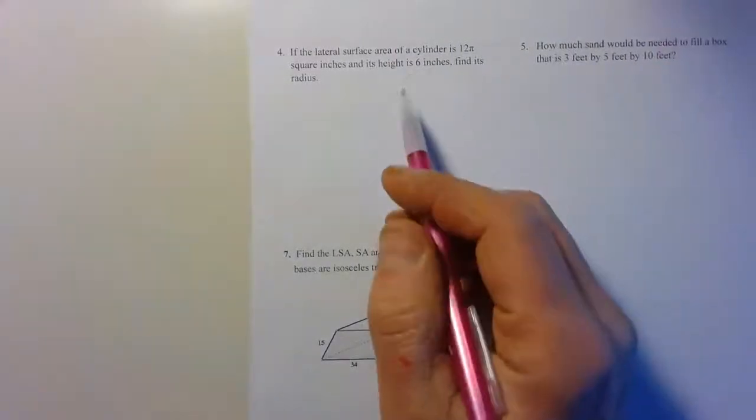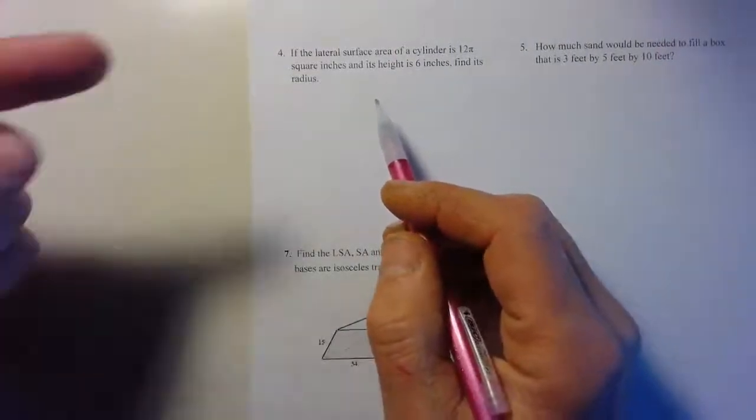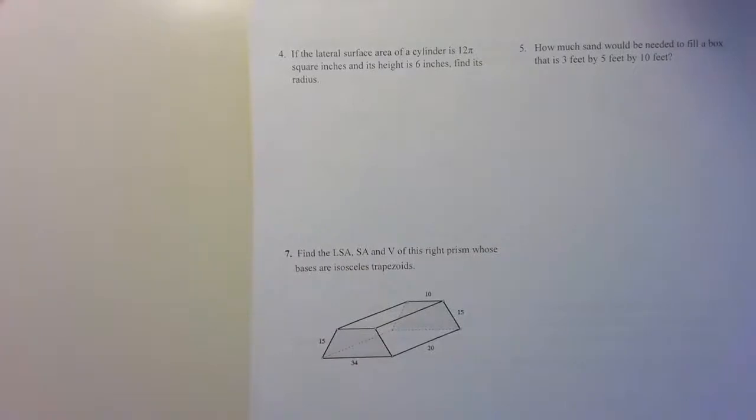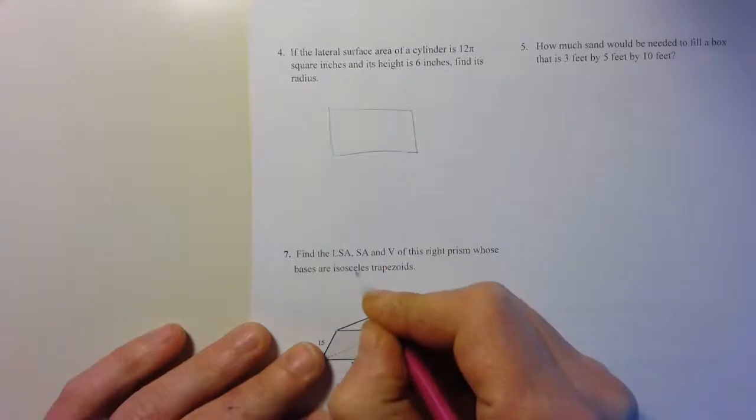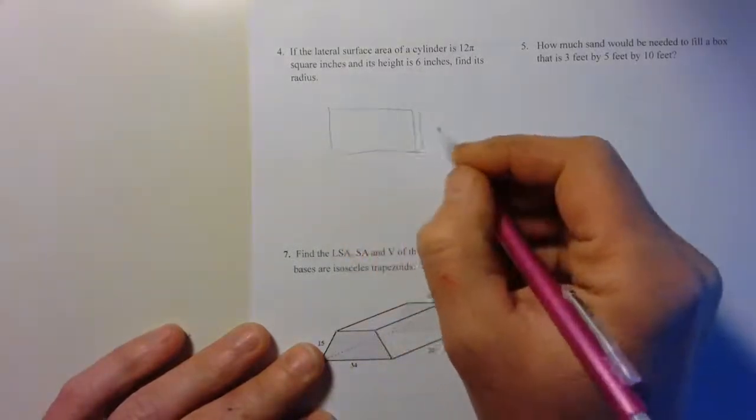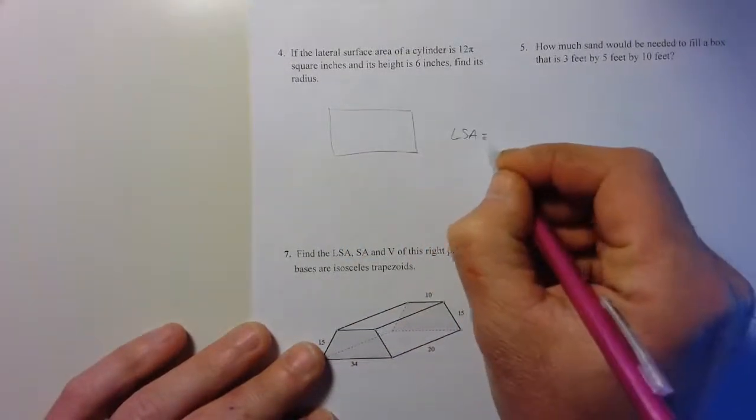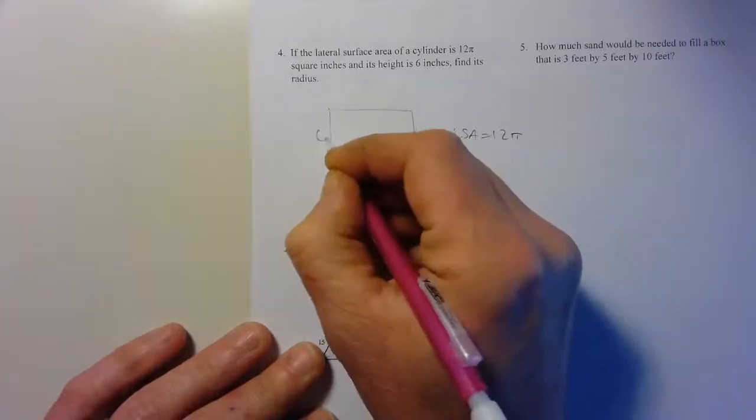We've seen how to find the lateral surface area. You're just going to be working backwards. You're going to think about that rectangle. Given that this has an area of 12π and the height is 6, you're going to have to figure out what this is.